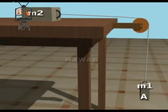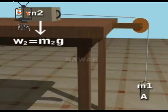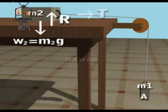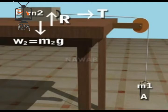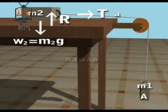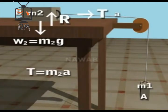Now consider the motion of body B. Three forces are acting on it: (1) weight W2 = M2G acting downward, (2) the upward reaction R of the horizontal surface, and (3) tension T of the string in the horizontal direction towards the pulley. As body B is not moving vertically, the vertical forces cancel each other. The only remaining force is T, due to which body B moves in the horizontal direction with acceleration A. Hence, according to the second law of motion, T = M2A.